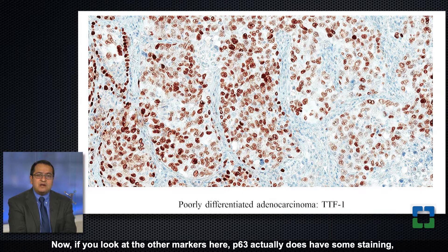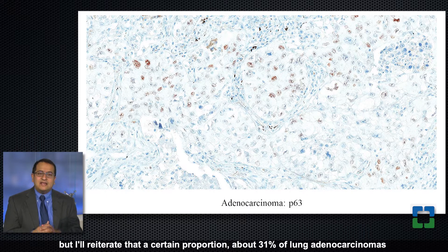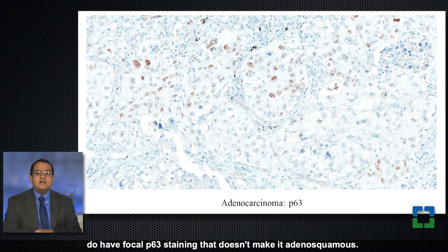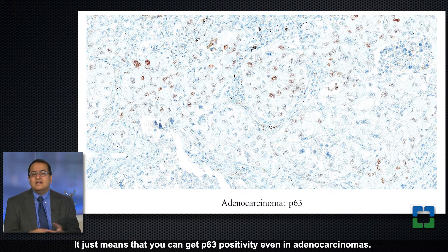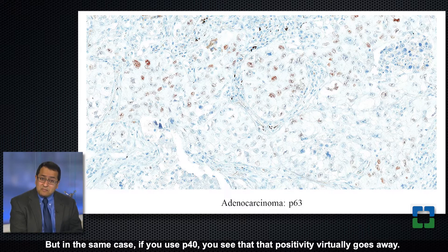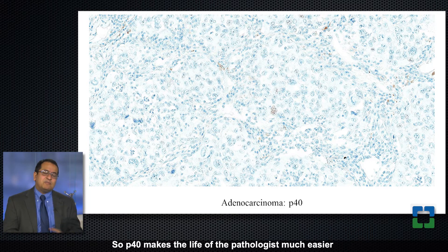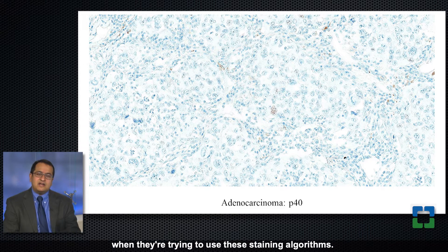If you look at the other markers, p63 actually does have some staining, but about 31 percent of lung adenocarcinomas do have focal p63 staining. That doesn't make it adenosquamous; it just means you can get p63 positivity even in adenocarcinomas, especially this kind of focal patchy positivity. But in the same case, if you use p40, that positivity virtually goes away, so p40 makes the life of the pathologist much easier.